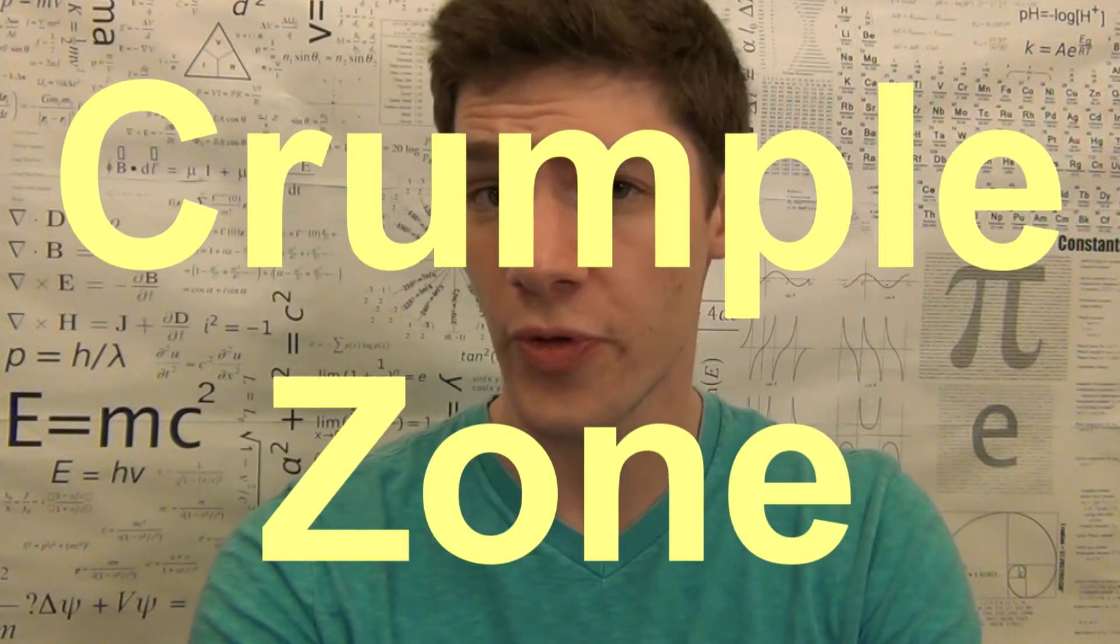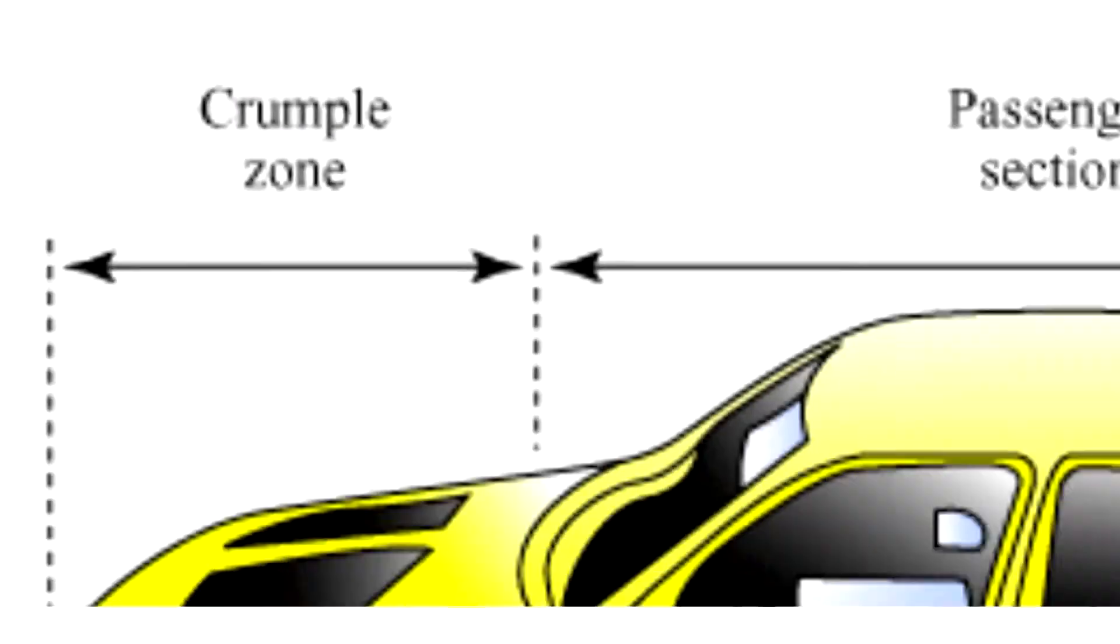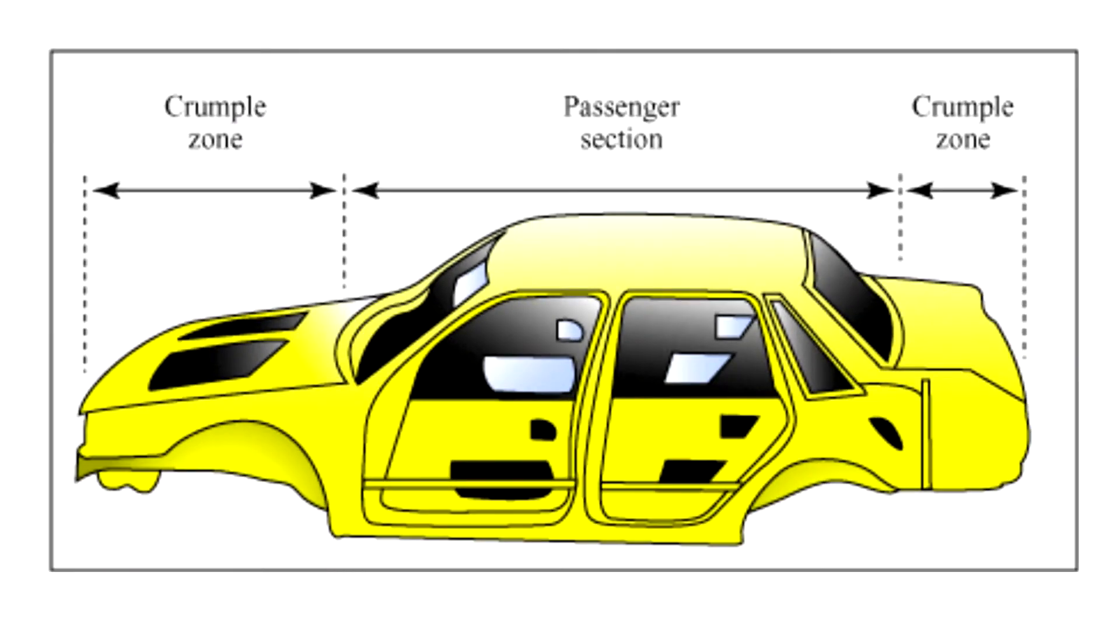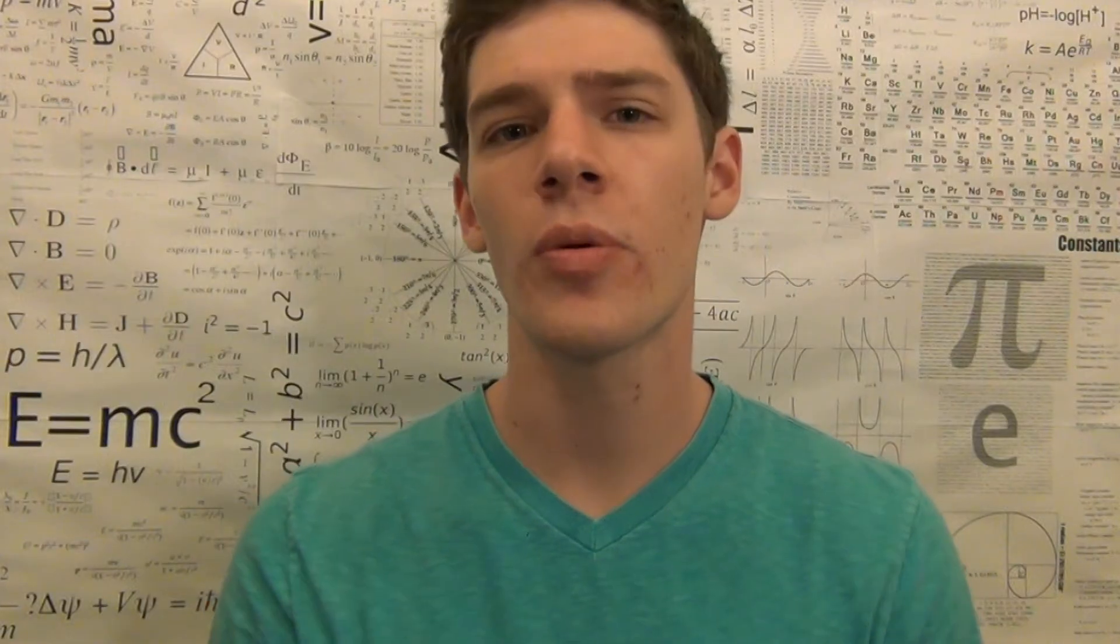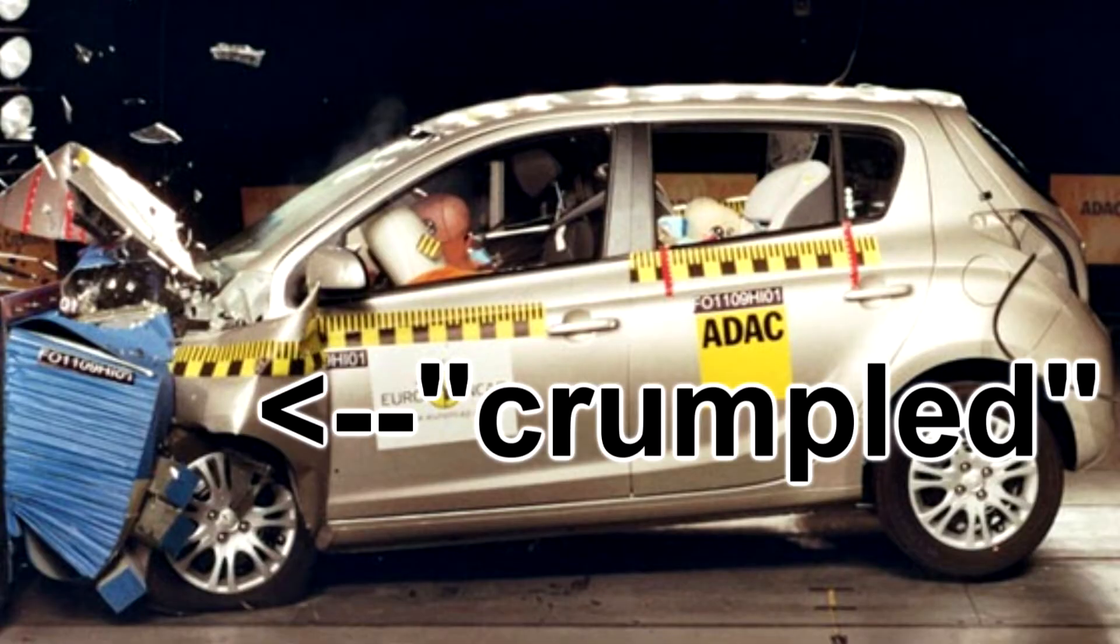But the most important mechanism aside from seatbelts is what's called the crumple zone. The crumple zone is typically found in the front and the back of the vehicle and collapses on purpose to absorb some of the force from the impact. The crumple zone takes away some of the energy that would be used to throw you around your car and uses it to actually deform the car itself.